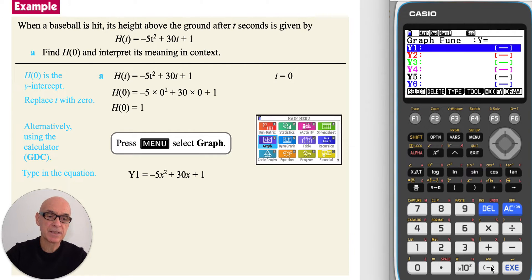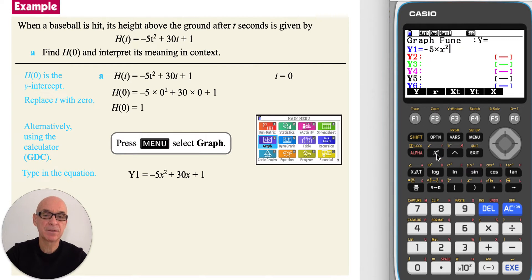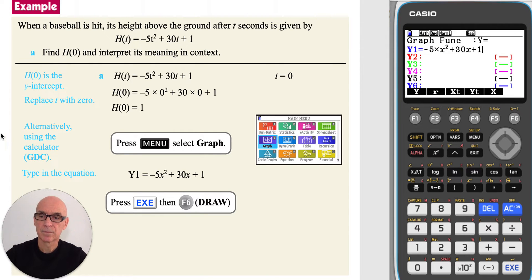That's negative 5 multiplied by, and pressing the x variable button for t, and then the squared button, and then plus 30, pressing the x variable button again, and then plus 1.